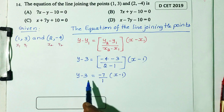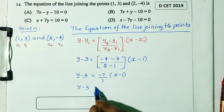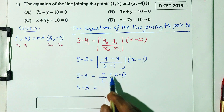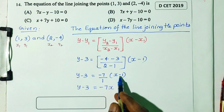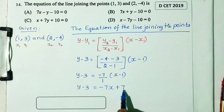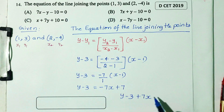Multiplying out: 1 into y minus 3 equals minus 7 into x minus 1. Expanding: y minus 3 equals minus 7x plus 7. Rearranging: minus 7x plus 7 plus y minus 3 equals 0.